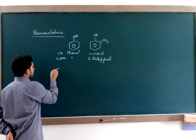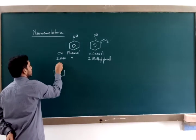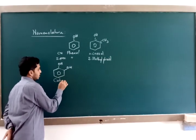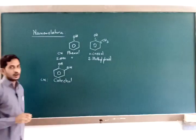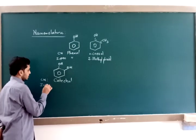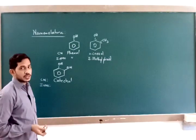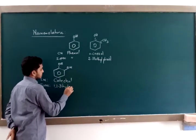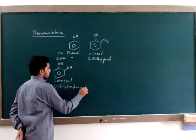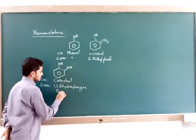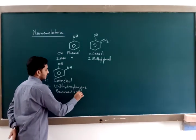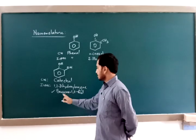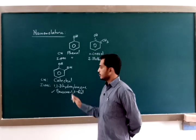Dihydric phenols are those which contain two hydroxyl groups. The compound with two hydroxyl groups at adjacent positions is commonly known as catechol. Its IUPAC name is 1,2-dihydroxybenzene, or more appropriately benzene-1,2-diol. If the same two hydroxyl groups are attached with one gap in between, then the common name is resorcinol, and the IUPAC name is benzene-1,3-diol.